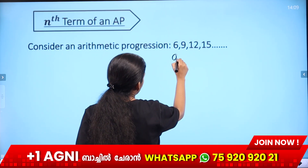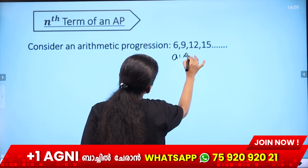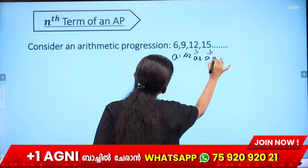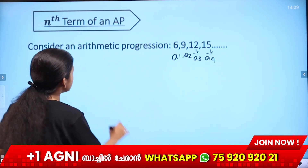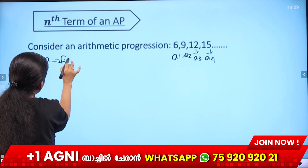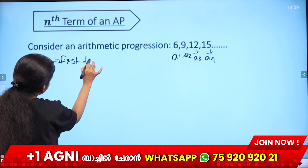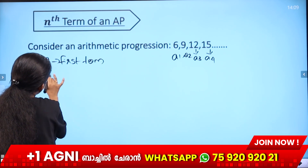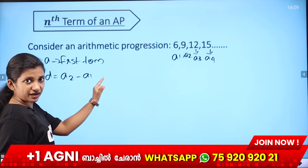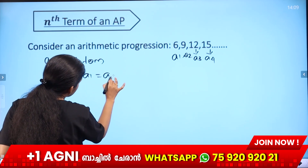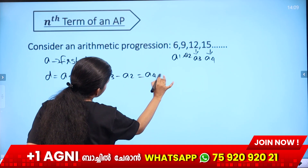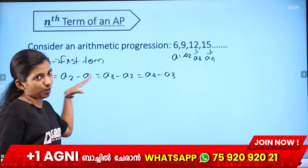In this arithmetic progression, the first term is a1, the second term is a2, the third term is a3, and the fourth term is a4. The first term we consider is 'a'. The common difference d is equal to consecutive terms — that is, a2 minus a1, or a3 minus a2. That is the common difference.